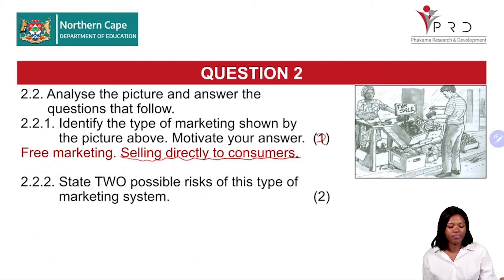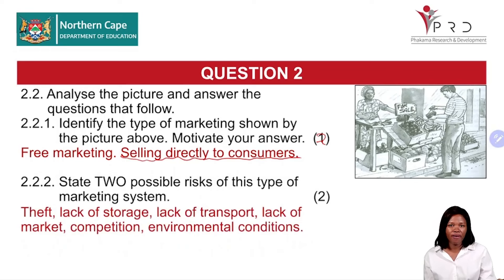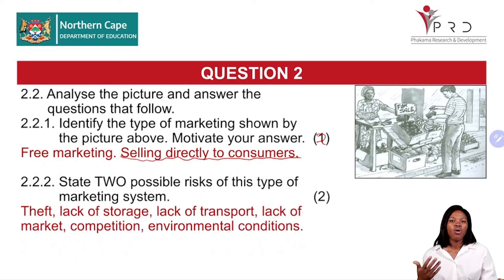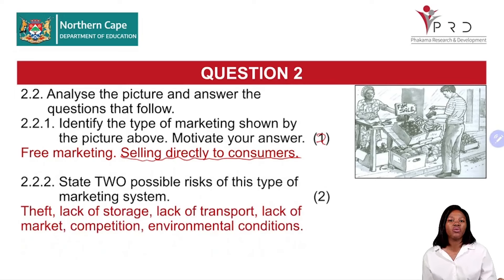Question 2.2.2: State two possible risks of this type of marketing system. Firstly, it is subject to theft. Lack of storage may lead to perishability. Lack of transport may lead to delays in delivery of agricultural products. Lack of a middleman means no one will market on behalf of farmers. There is also competition, because everyone is free to sell whatever product they want, and environmental conditions can decrease production.